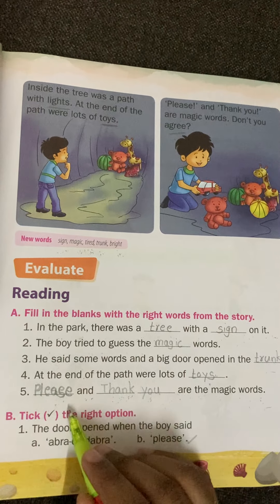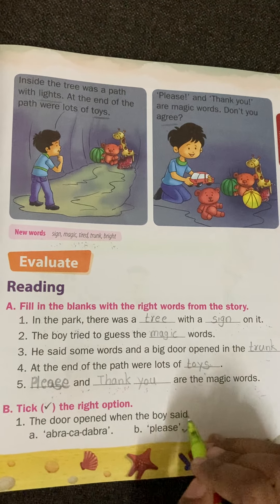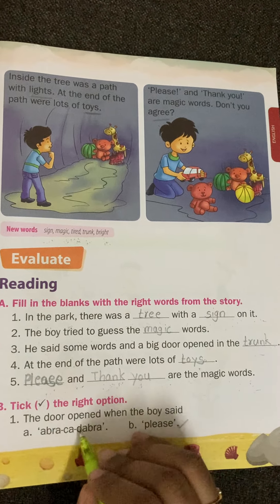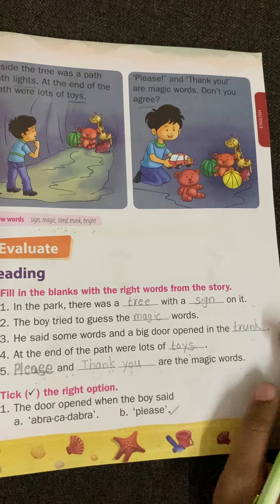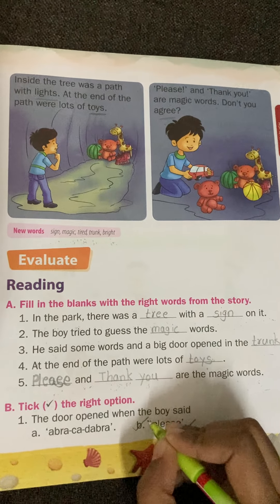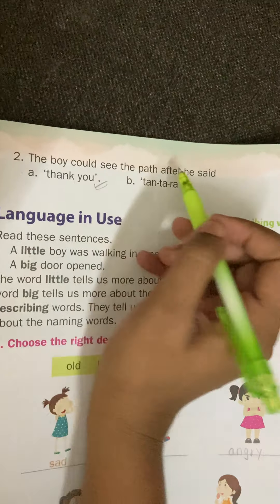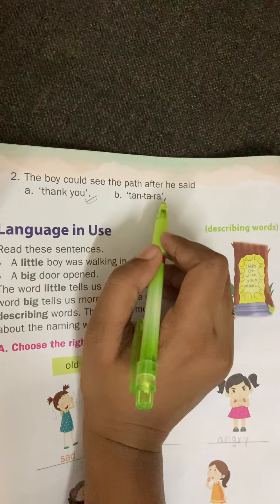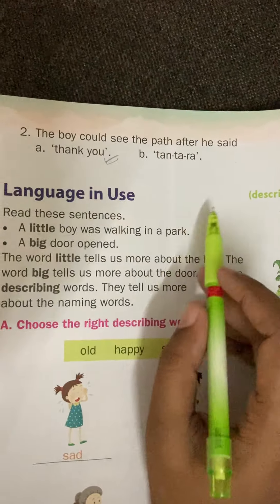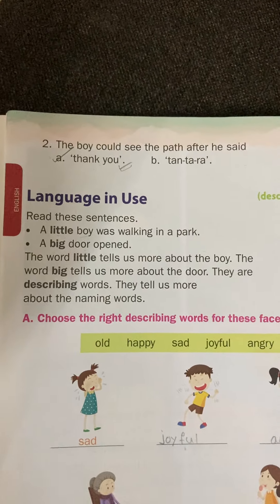Now tick the right option. The door opened when the boy said 'please' — not abracadabra. When the boy said 'thank you,' he could see the path inside the tree.